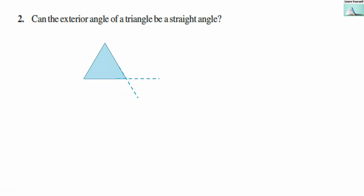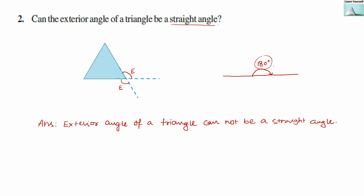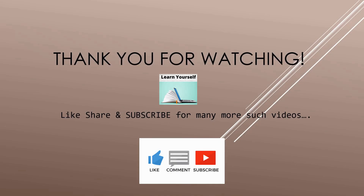Our second question: can the exterior angle of a triangle be a straight angle? A straight angle has a measure of 180 degrees. For an exterior angle to be a valid angle, it has to be less than 180 degrees. If it is 180 degrees — a straight angle — then there won't be any angle formed. So no, the exterior angle of a triangle cannot be a straight angle.